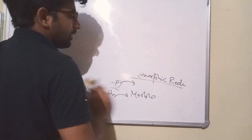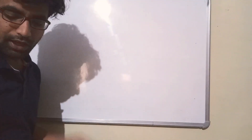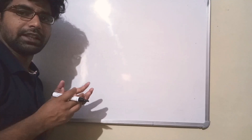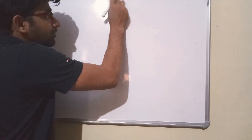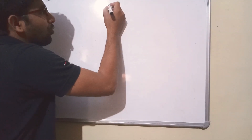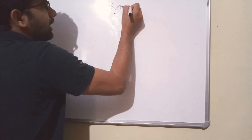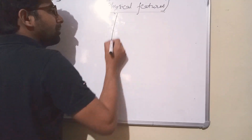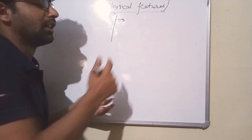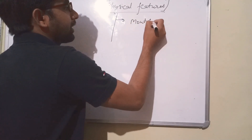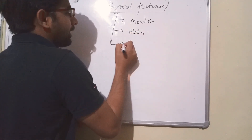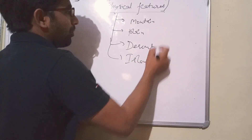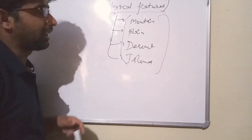Now let's understand the geographical features of the earth - how we have different geographical features. So what are physical features? Physical features refer to the earth's topography: how many mountains, how many plains, deserts, and islands. Basically we will talk about these features, and the first feature is mountain.